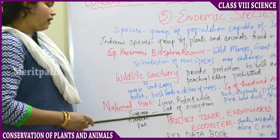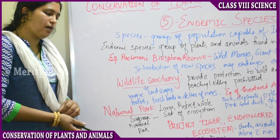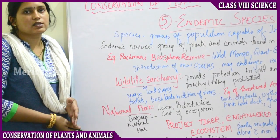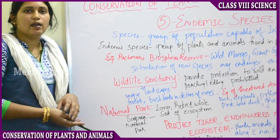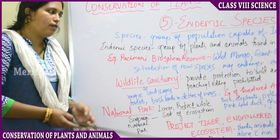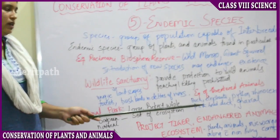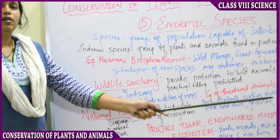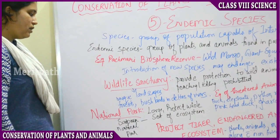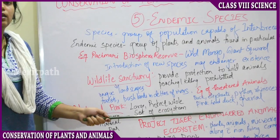In national parks, take the example of Satpura National Park — some animals are getting threatened. Threatened animals face the danger of getting extinct, meaning their quantity is getting less day by day and may in the near future go extinct. Examples of threatened animals in Satpura National Park include blue buck, elephant, python, rhinoceros, pink head duck, and gharial. These animals face the threat of becoming extinct.